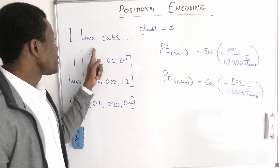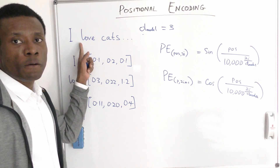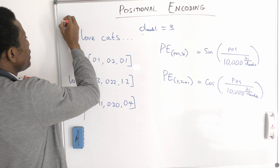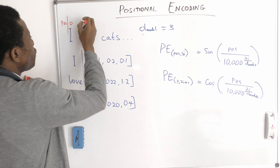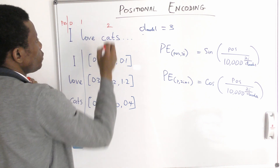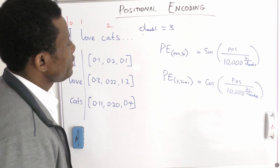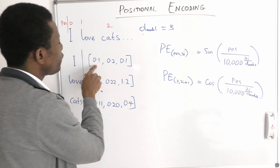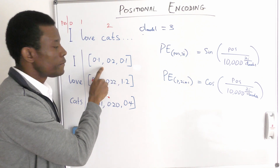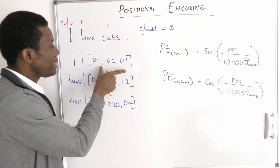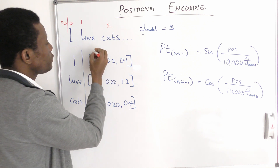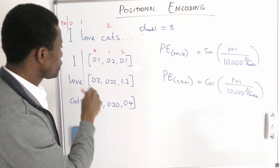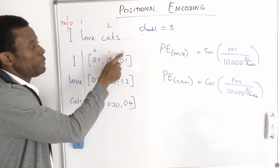What is POS and what is i? POS is the position — the index of the token in the sequence. So for our three tokens, POS values are 0, 1, and 2. And i is the index of the embedding dimension in the embedding vector. In this case we have dimension 0, dimension 1, and dimension 2.